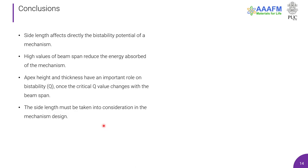Finally, we concluded that the side length affects directly the bistability potential of a mechanism. High values of beam span reduce the energy absorbed of the mechanism. The apex height and thickness have an important role on bistability, which is represented by the ratio Q, once the critical Q value changes with the beam span. The most important statement is that the side length must be taken into consideration in the mechanism design, once it's massively important and affects the force displacement relationship of the mechanism.